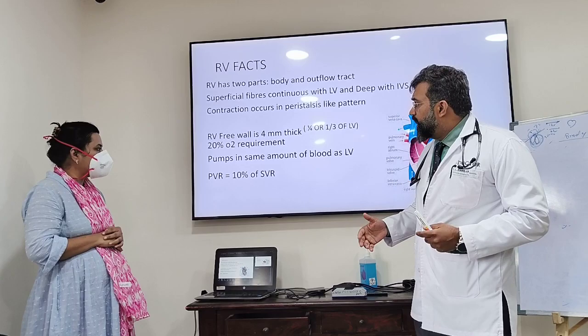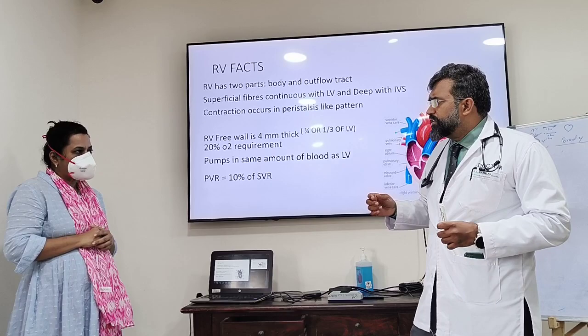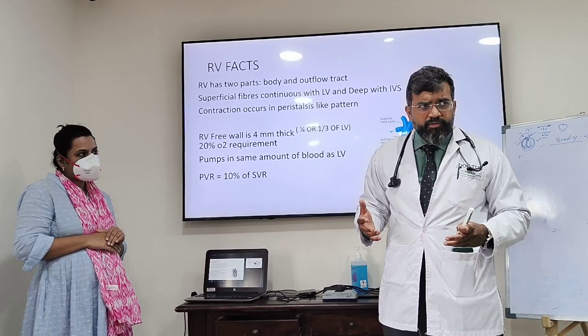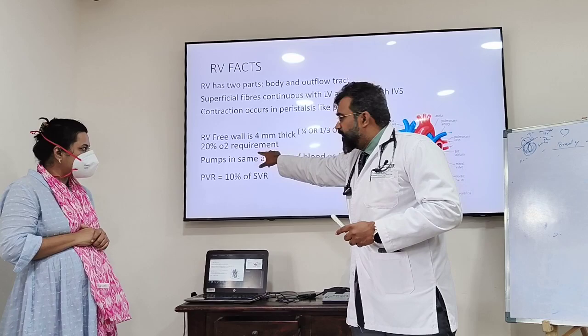The second thing is the RV free wall is 4 mm thick. What this tells you is that if it has to get thick, it means it has to be chronic — very, very chronic. It cannot acutely become thick.